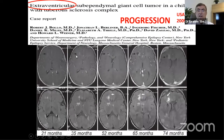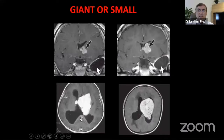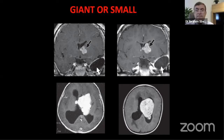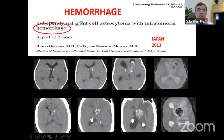SEGA lesions do progress — the natural history shows growth over time, as demonstrated from 21 months through 74 months in serial imaging. They can be small or become very giant. Hemorrhage into these tumors can also occur, presenting with acute manifestations, as reported in a paper from Japan.